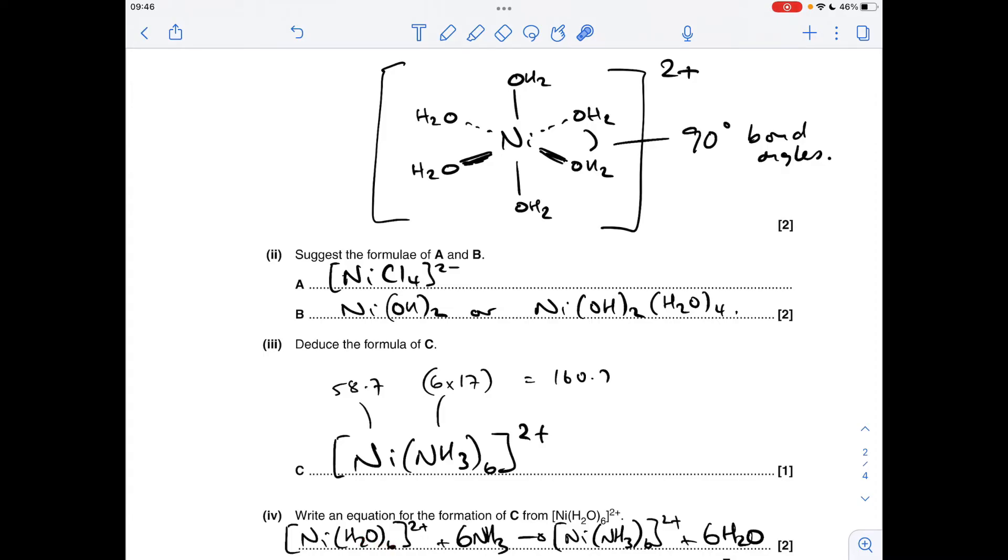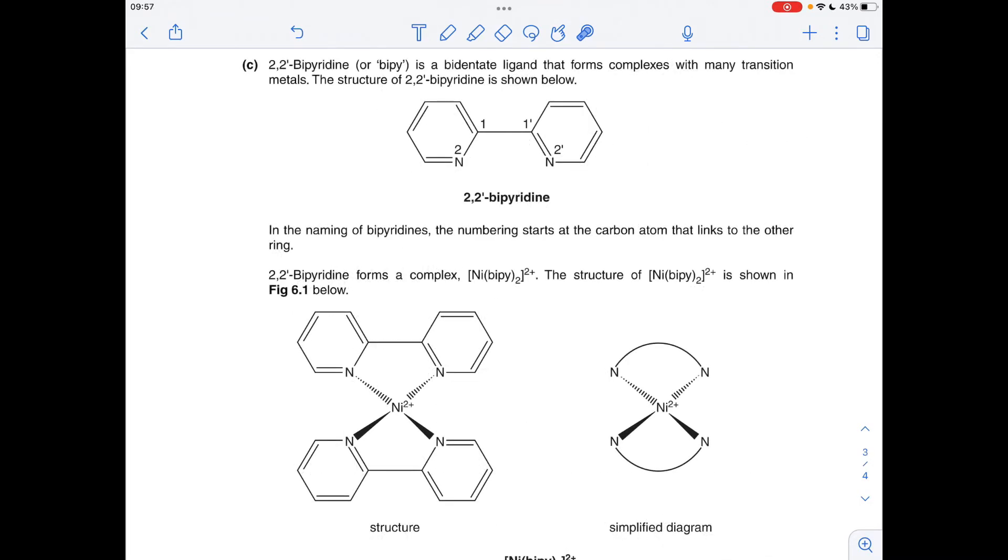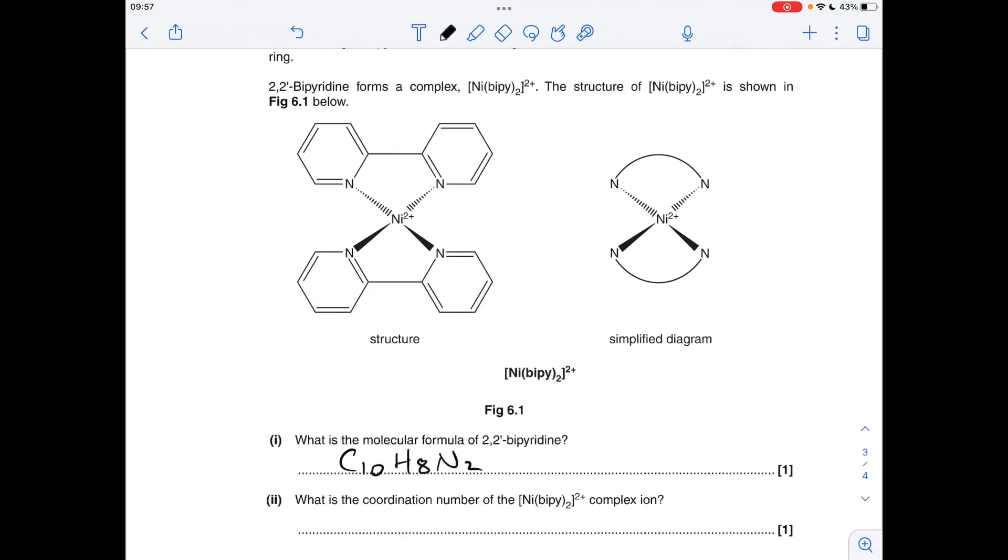Moving on to part C, we've got all this information about this unfamiliar ligand, 2,2-bipyridine. First thing, we've got to work out the molecular formula of the ligand. In each of the rings we've got five carbons, one nitrogen, and then on each kink of the ring you've got hydrogen, so there'll be four hydrogens there, and because it's two of those, we just double that out. That gives us a molecular formula C₁₀H₈N₂.